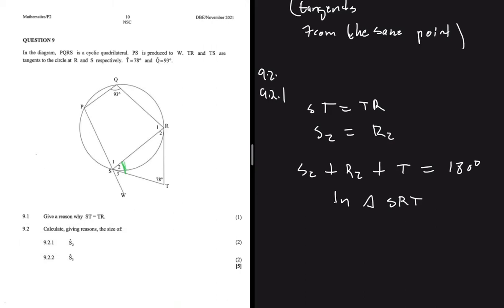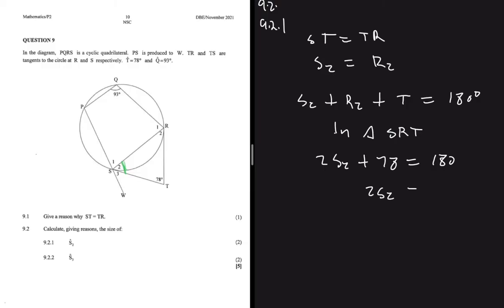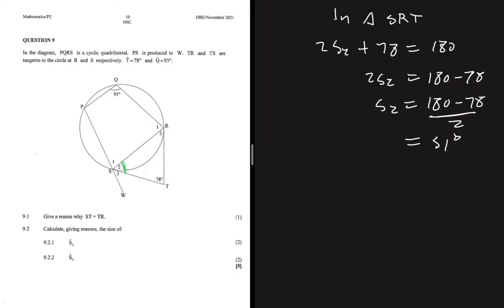In triangle SRT, since S2 equals R2, we have 2S2 plus 78 equals 180. So S2 equals 180 minus 78 divided by 2. That's 102 divided by 2, which gives you 51 degrees. So S2 equals 51 degrees.